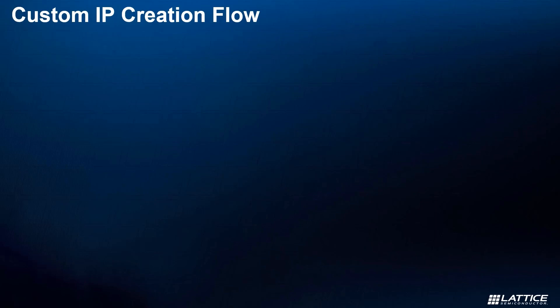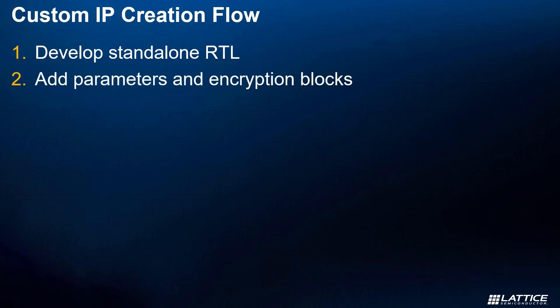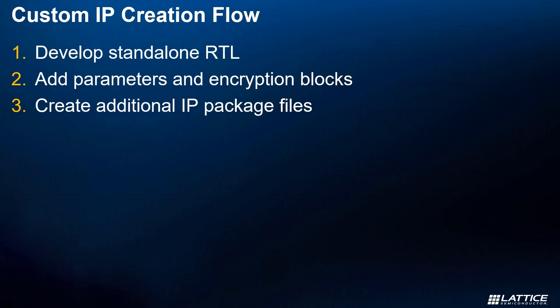The high-level flow for creating your own IP can be broken into two simple halves. In the first half, you'll need to set up and create the source files for your IP, beginning by first developing your standalone RTL. Once your RTL is synthesizable and can pass through the tool flow on its own, the next step is to prepare it for IP packaging by adding parameters corresponding to whatever you want to configure in the final IP package. If you want to encrypt your RTL, you also need to add the encryption pragmas at this point. Once your RTL is set up, the next step is to create whatever additional files you want to package with your IP, such as C driver code, additional help documentation, or a Python plugin script.